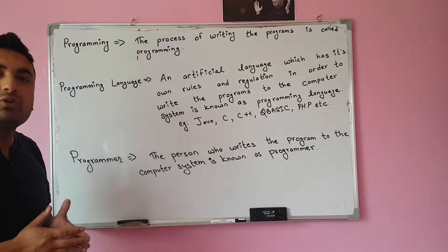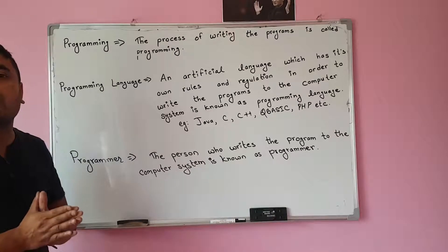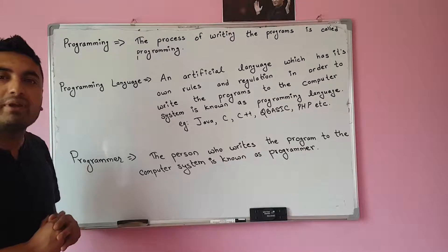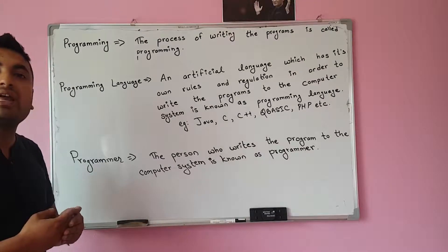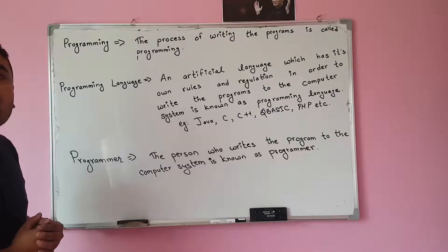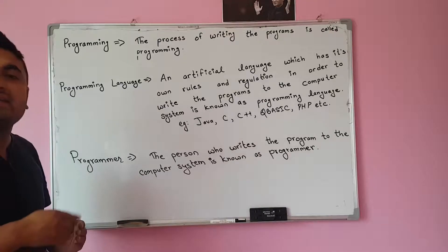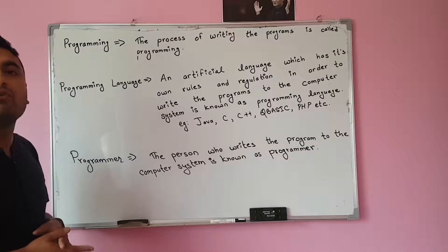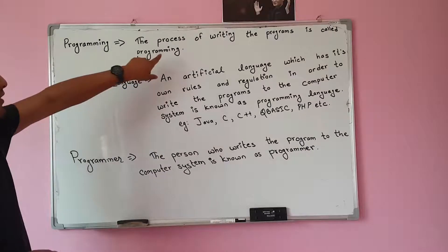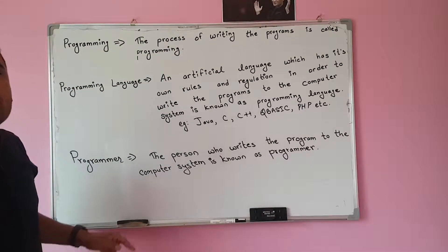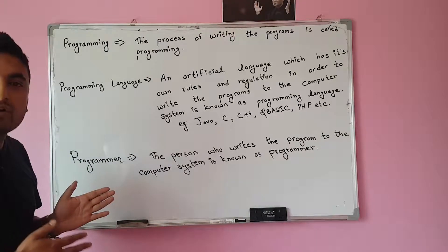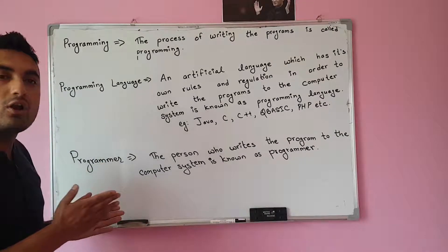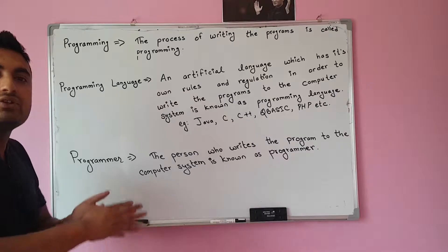Programming is used in maximum areas — computer science, IT. The process of writing programs to the computer system is known as programming. We use the steps of the system development life cycle. It is the method of writing the programs to the computer system, and it also solves our day-to-day activities by using the computer system.